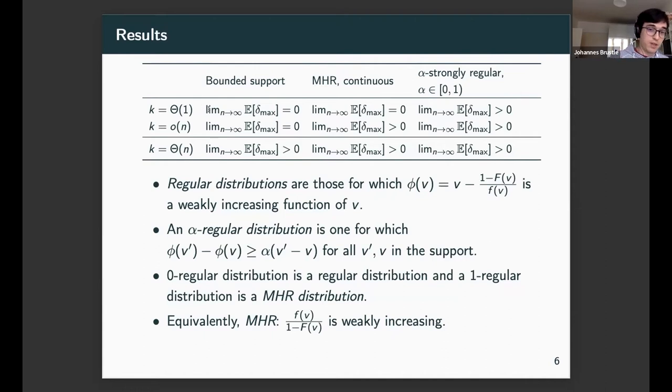If you take K equals 1 in the bounded support case, if you're the top bidder, how much could you shade down to the second largest bid? As n goes to infinity, the second largest bid will also tend to the supremum of the support of the distribution, so there is no shading possible in the end, which means our quantity equals zero. For the other two families of distributions, let me introduce them quickly.